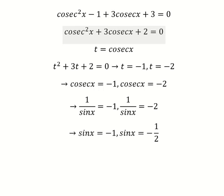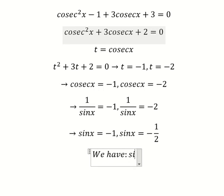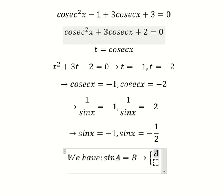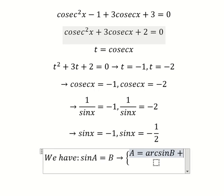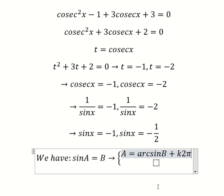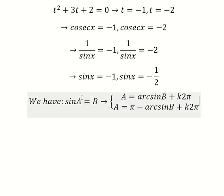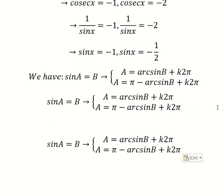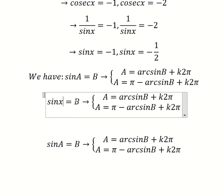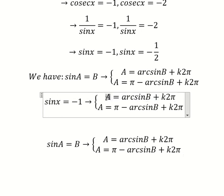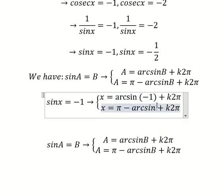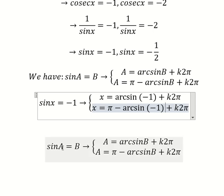Now we have the formula. For this one we have s equal to arcsin(b) plus 2kπ, and s equals π minus arcsin(b) plus 2kπ. If we apply the formula, it will be like this — we put s in here and negative one in here. Similar for the next one.